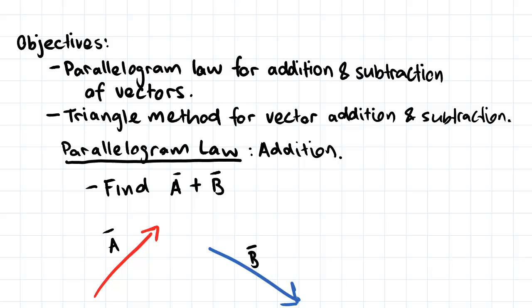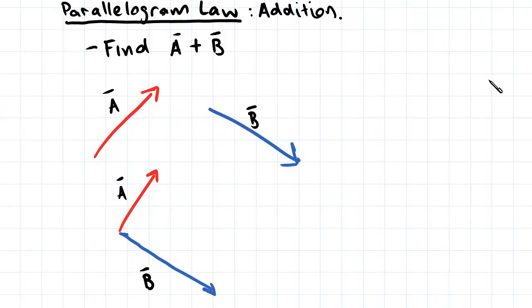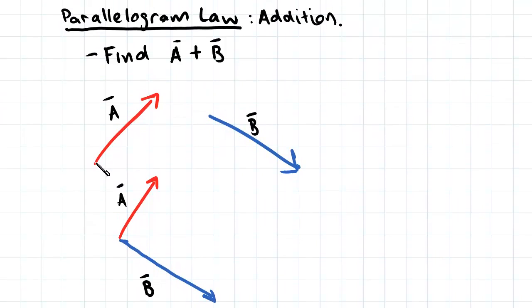First we'll start with the parallelogram law. We've been asked to find vector A plus vector B. Vector A is this one in red, vector B is this one in blue.